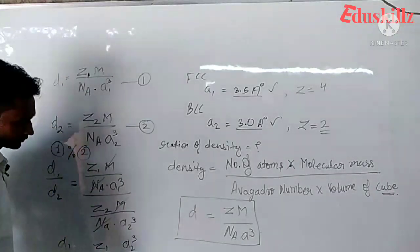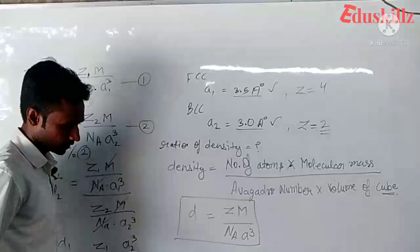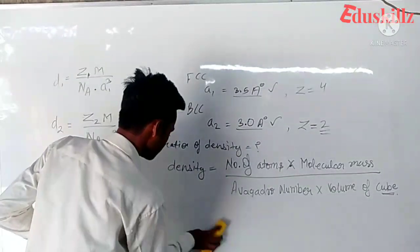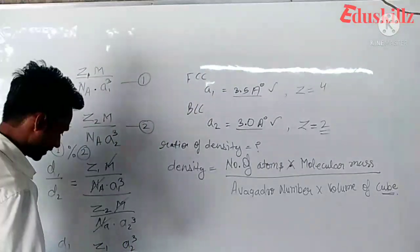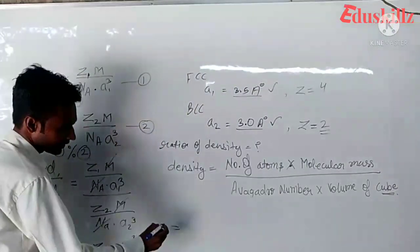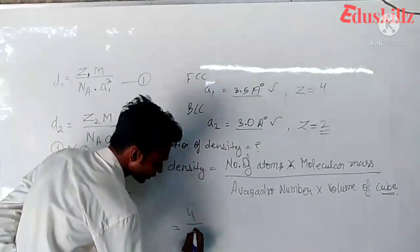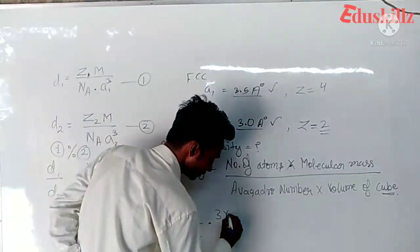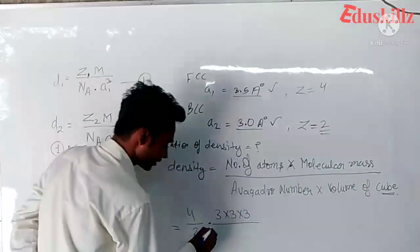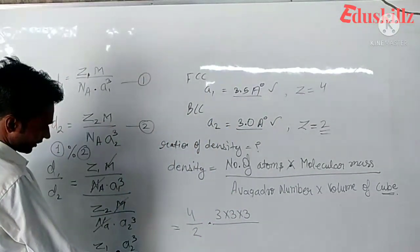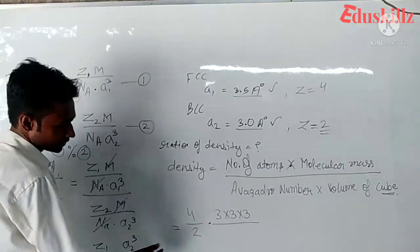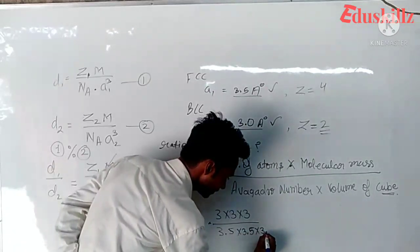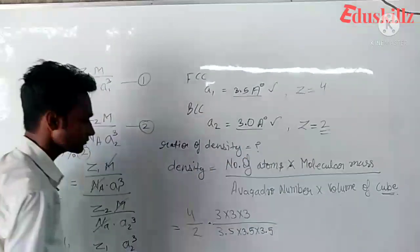Now put the value in this formula. Z1 is 4, Z2 is 2, times 3.0 into 3.0 into 3.0 divided by 3.5 into 3.5 into 3.5.